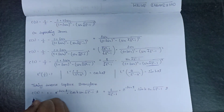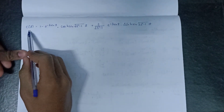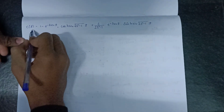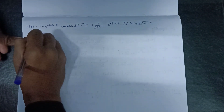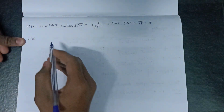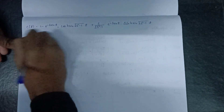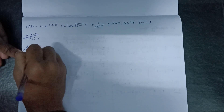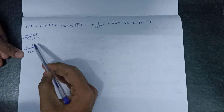Now we will put the value of t equals 0 first and t equals infinity second. At t equals 0, c(0) equals 0 after evaluation. At t equals infinity, the whole expression gives c(t) equals 1. So at t=0 we get 0 and at t=infinity we get 1.